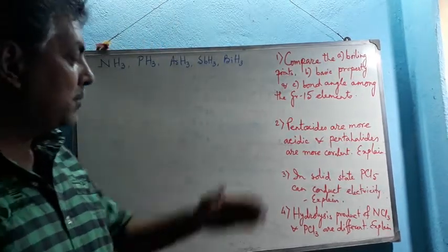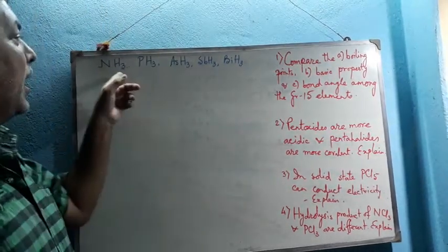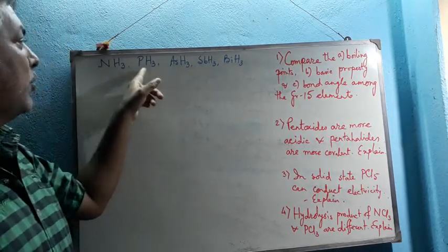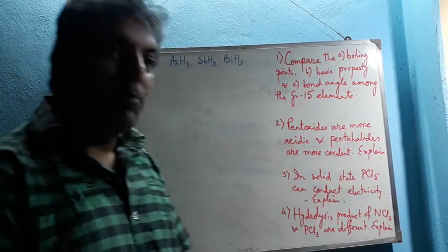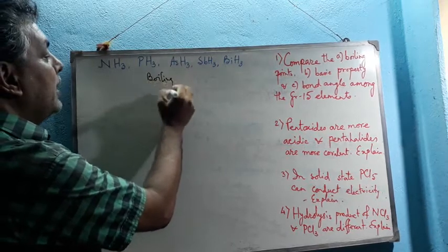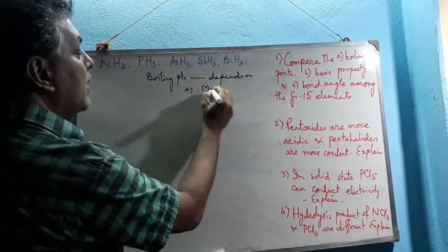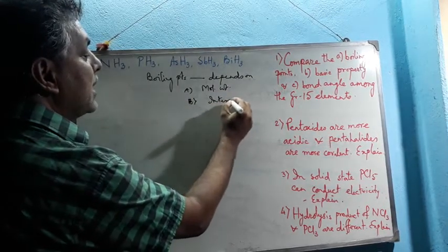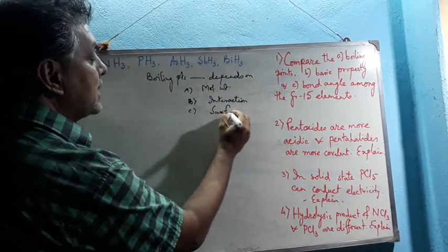We are going to explain some questions. The first question is to compare the boiling points of hydrides of the Group 15 elements: ammonia, phosphine, arsine, stibine, and bismuthine. Boiling point depends on: first, molecular weight; second, intermolecular interactions; and third, surface area.